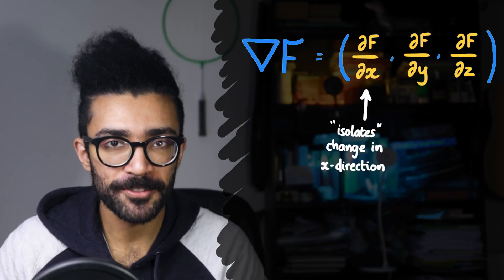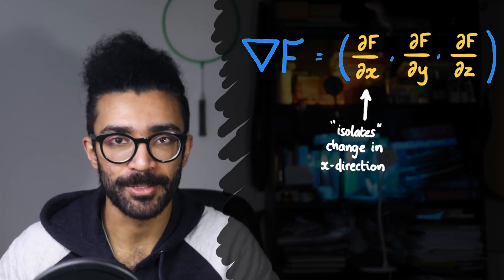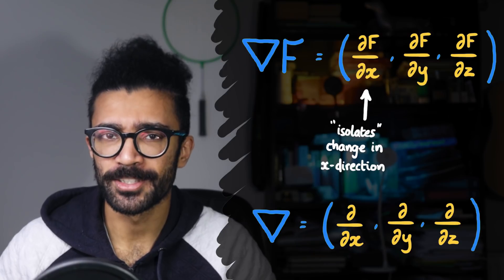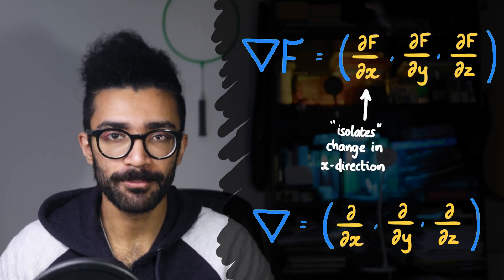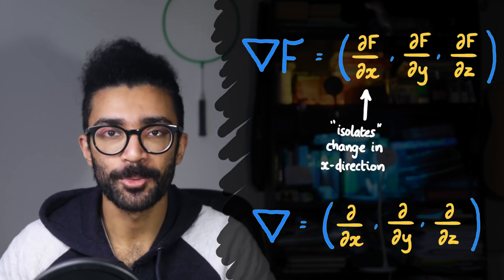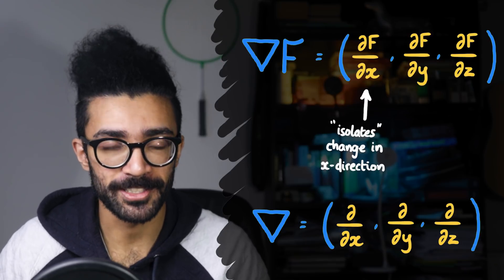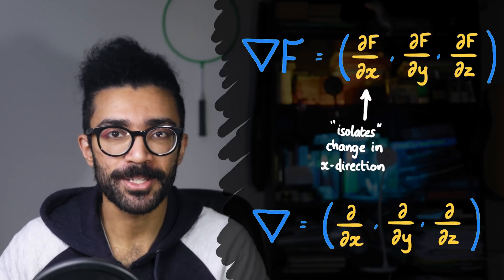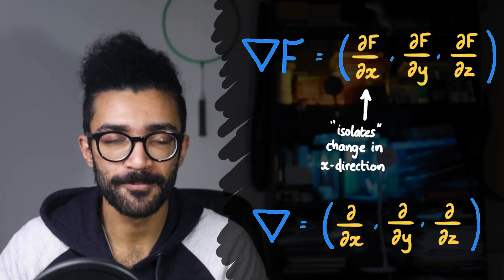If you're unfamiliar with partial derivatives, by the way, I'll leave some resources in the description box below. Anyway, so this is what the downward pointing triangle nabla, or del, represents. As always, we've just sort of scratched the surface, there's obviously a lot more to it than that, but for the purposes of this video, we've covered what we need to know.